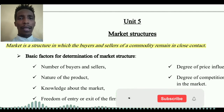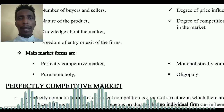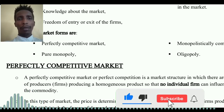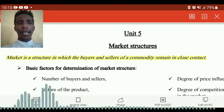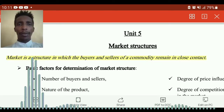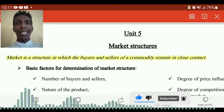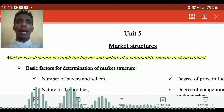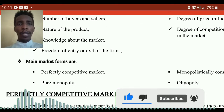What is market structure defined? The market is a structure in which buyers and sellers of a commodity remain in close contact. The market offers many goods, sellers, producers, and direct interactions. The market is a transaction of goods and services, and it represents a form of market structure.